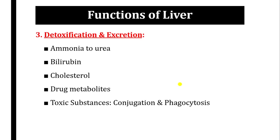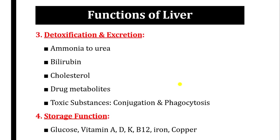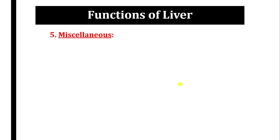Detoxification and excretory functions include excretion of urea by detoxification of ammonia, bilirubin — the end product of heme catabolism — excreted by the liver to the small intestine, cholesterol excreted as bile salts, and drug metabolites and other toxic substances detoxified by conjugation and phagocytosis. The liver also stores nutrients: glucose as glycogen, fat-soluble vitamins A, D, E, K, water-soluble vitamin B12, iron, and copper.